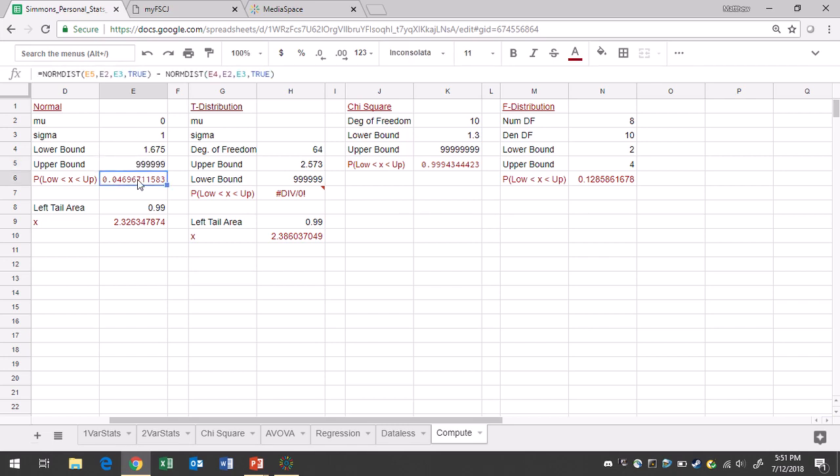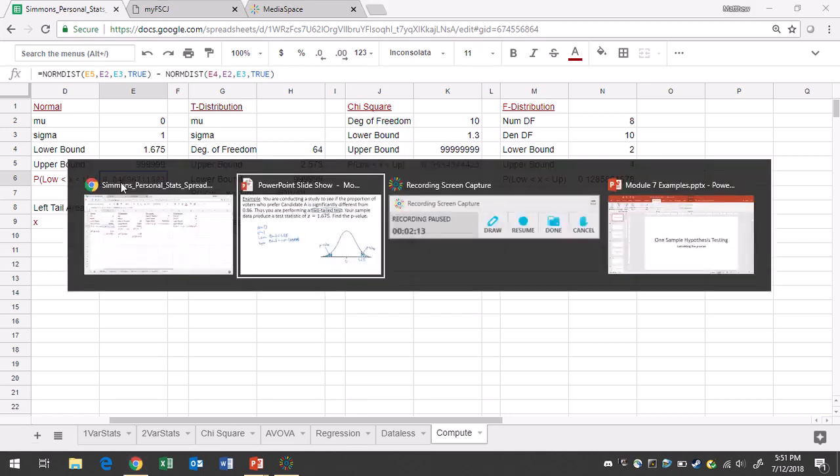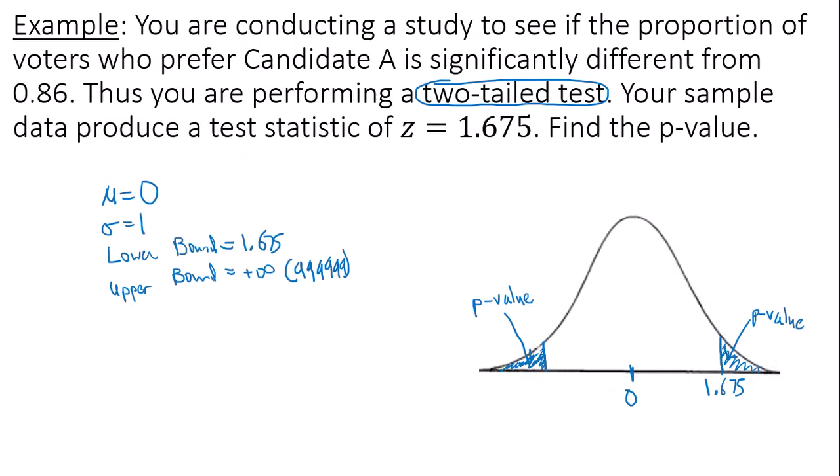Look at your probability. So this is the area of that right-hand tail, 0.047 if I round. But I want to keep this. I want to write it out as 0.04967. So 0.04967, which means my left tail is also 0.04967.